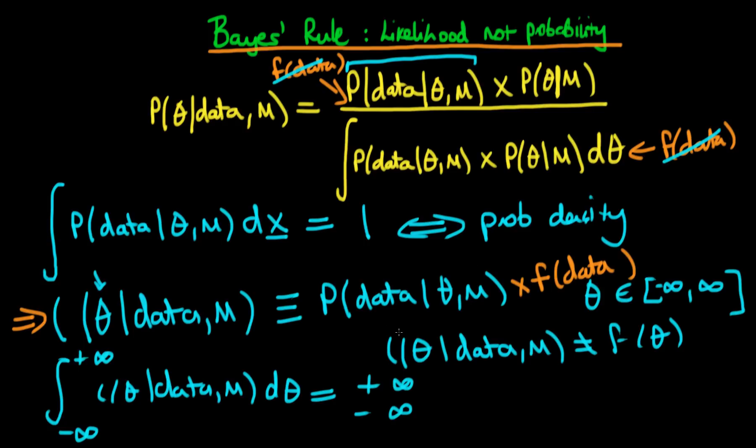So actually in terms of inference it makes no difference whether I define likelihood as being exactly equal to this probability or whether it's equal to this probability times some theta-independent factor which I've called f of data. You can think about the likelihood as being the probability or the conditional probability times some constant factor or some factor which is theta independent.